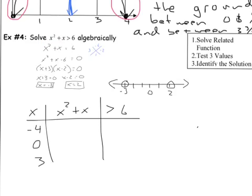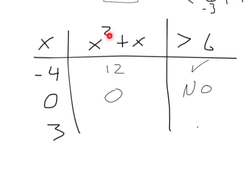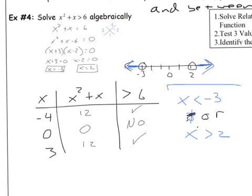We're going to determine whether or not that is greater than or equal to 6, because that was our original situation. Most of this we can do in our head. Negative 4 squared is 16, plus negative 4 is 16 minus 4, which is 12. Is that greater than 6? Yes, it is. 0 squared is 0, plus 0 is just 0 — is that greater than 6? No. 3 squared is 9, plus another 3 is 12 — is that greater than 6? Yes, it is. So we know where the solution is. It's less than negative 3 and greater than positive 2 — it's in both of those situations. So we could write our solution: x is less than negative 3, or x is greater than 2.